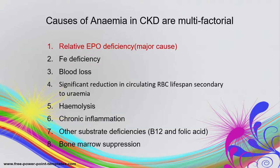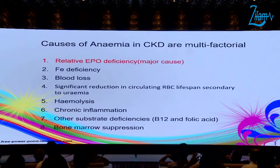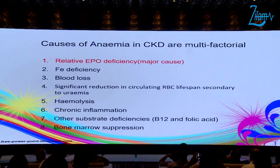There are many factors causing anemia in CKD. The primary cause is relative EPO (erythropoietin) deficiency. Other causes include iron deficiency, blood loss, shortened circulating red blood cell lifespan secondary to uremia, hemolysis, chronic inflammation, and deficiency of other substrates such as folate, as well as bone marrow suppression. The major cause is related to EPO deficiency.